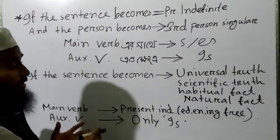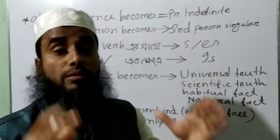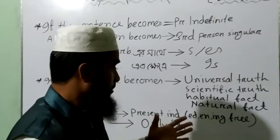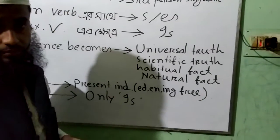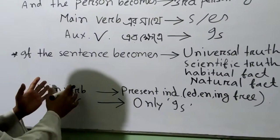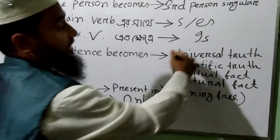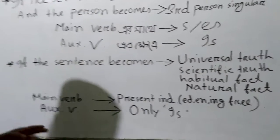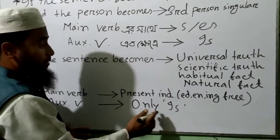That means the verb will be used in the present indefinite — the main verb will be free from 'ed', 'en', and 'ing'. The verb will be free from 'ed', 'en', 'ing'. In respect of auxiliary verb, only 'is' is used.